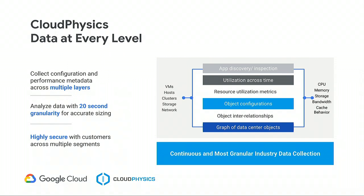All data coming in is encrypted and anonymized — we're looking at just an org identifier and performance metadata. No IP addresses or MAC addresses are included in most assessments unless that's something you want to enable.